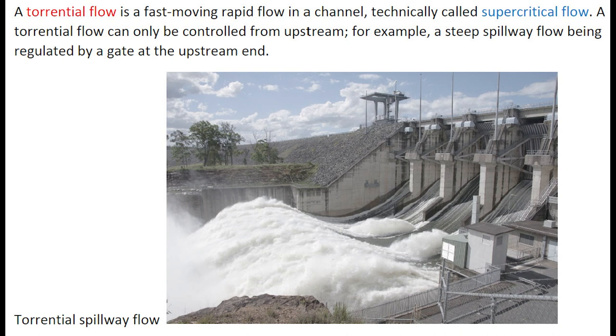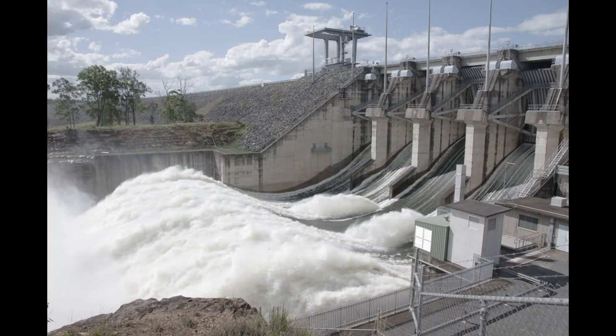A torrential flow is a fast-moving rapid flow in a channel, technically called supercritical flow. A torrential flow can only be controlled from upstream, for example, a steep spillway flow being regulated by a gate at the upstream end.